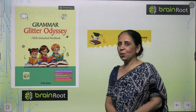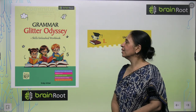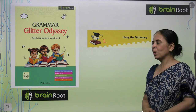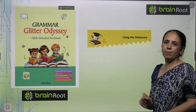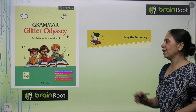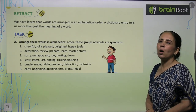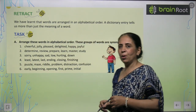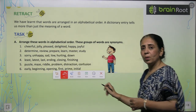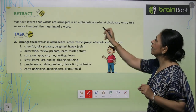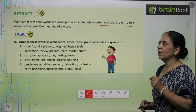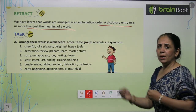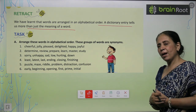Hi kids! Welcome to your new class of grammar. This is your Grammar Glitter Odyssey by Brain Roots, and we are starting with Grade 5, Chapter 1: Using the Dictionary. Let's start with the chapter and retract what we already know. We have learned that words are arranged in alphabetical order, and the dictionary is always arranged with any word's meaning — so it is arranged in alphabetical order.